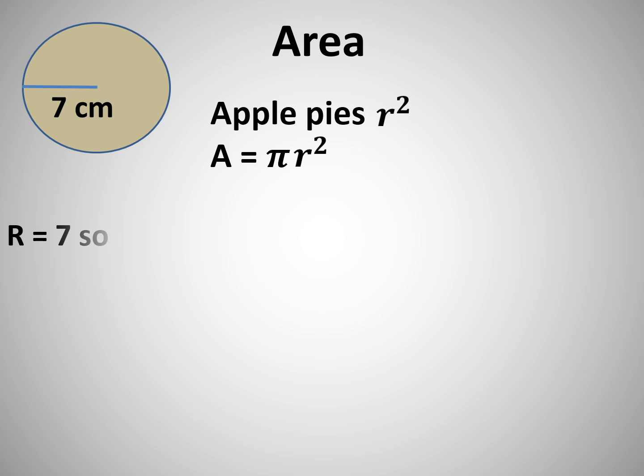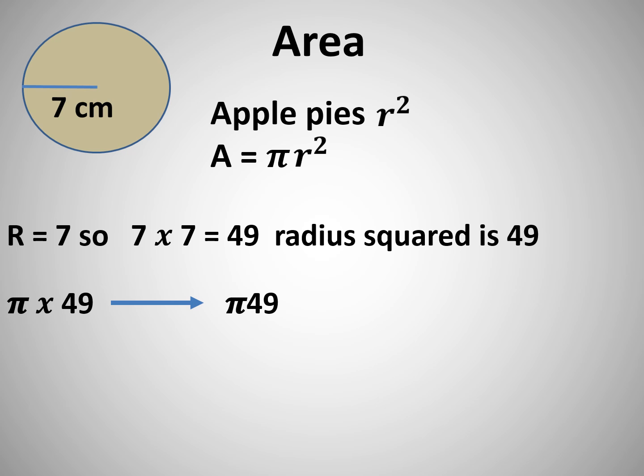Now let's have a look at area. There's our circle, so apple pies are two. A equals π times r squared. So we need to square the radius first: 7 times 7 is 49, pi times 49.